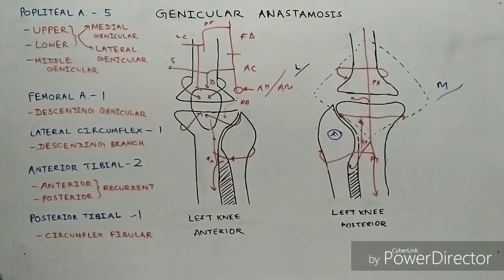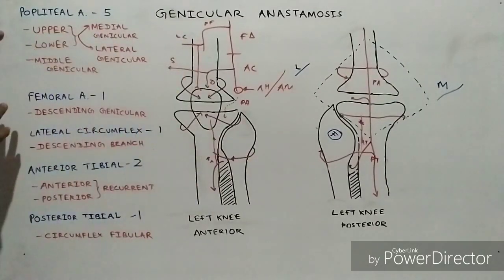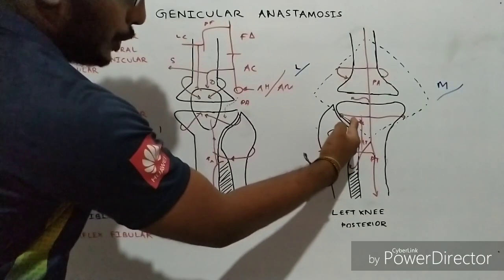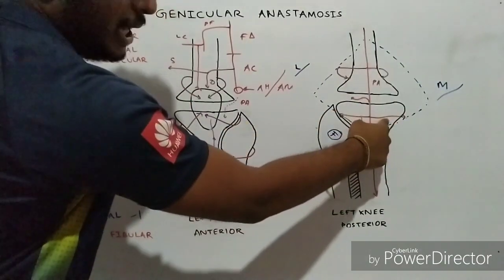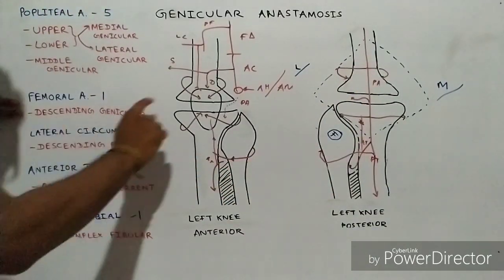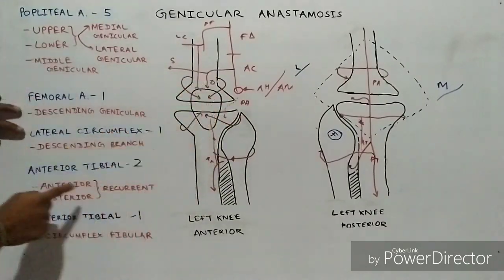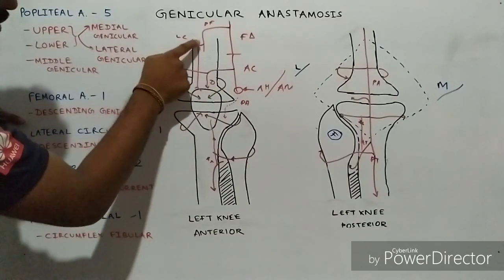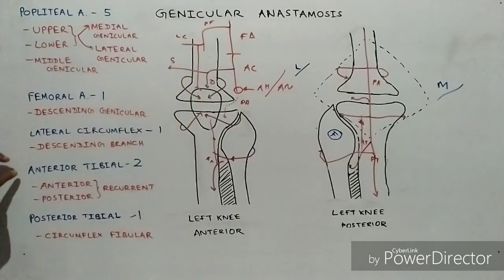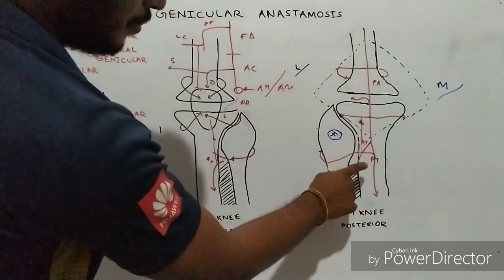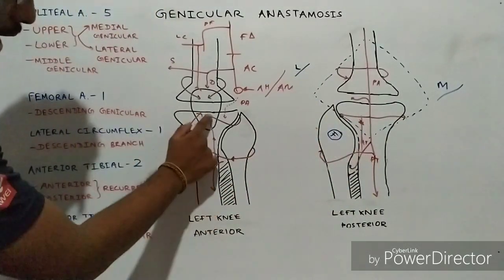That's all about the genicular anastomosis. As a review, the five branches from the popliteal artery are: upper lateral genicular, lower lateral genicular, upper medial genicular, lower medial genicular, and the middle genicular branch. Then there is the descending genicular branch from the femoral artery, and the descending branch from the lateral circumflex artery which arises from the profunda femoris.